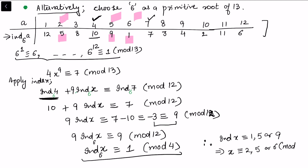So these are the possible solutions using indices. Both choices of primitive root — 2 and 6 — yield the same answer, confirming x is congruent to 2, 5, or 6 mod 13 as solutions for our given non-linear congruence.